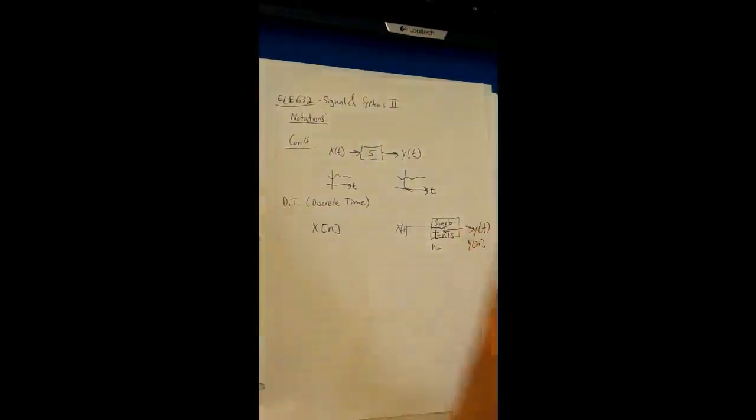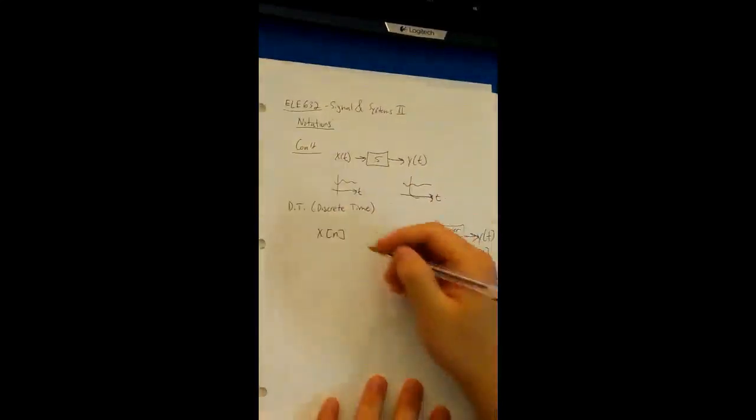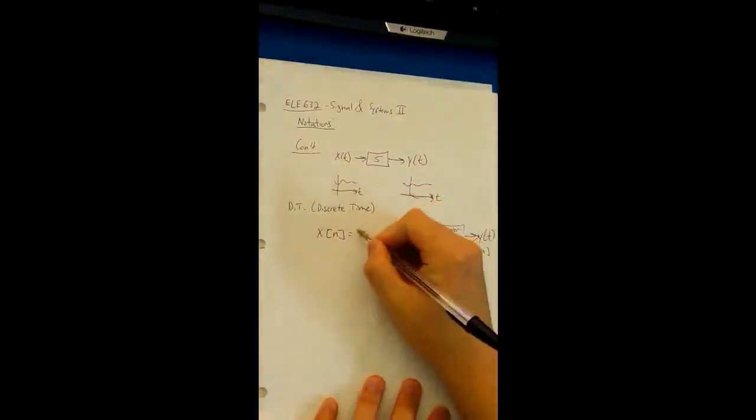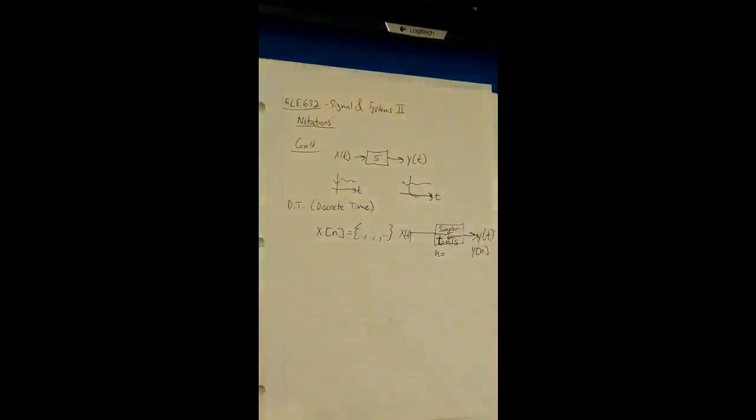So essentially you have data points now. You don't have a continuous function that describes every instantaneous time. But now you have essentially a set. So X of N is going to be equal to a set of different elements, and these elements can be anything.